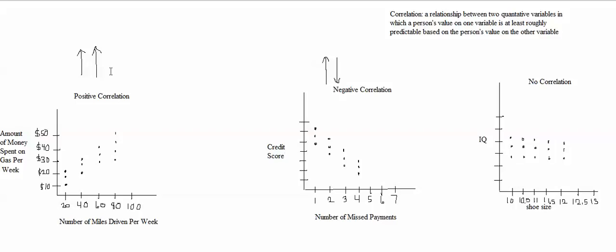So if two variables are correlated, either with a positive correlation or a negative correlation, then a person's score on one variable is at least roughly predictable based on the person's score on the other variable. If two things are not correlated with each other, then it's not possible to predict a person's score on one variable based on their score on the other variable.